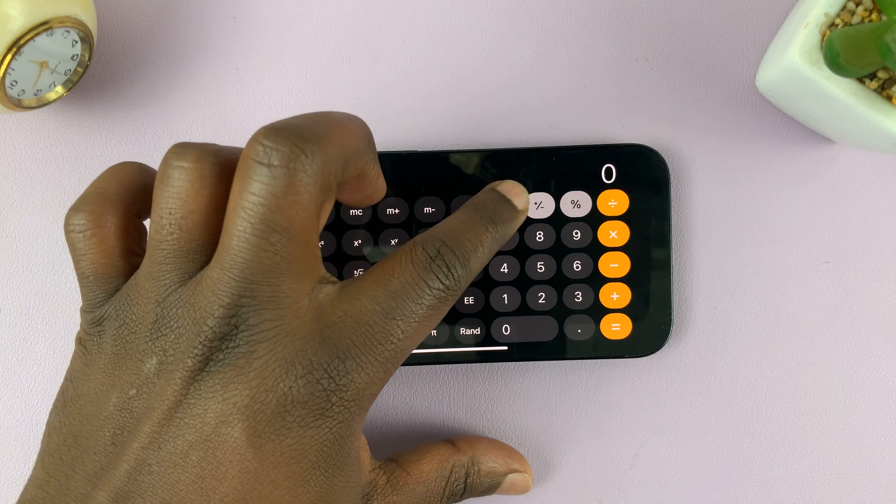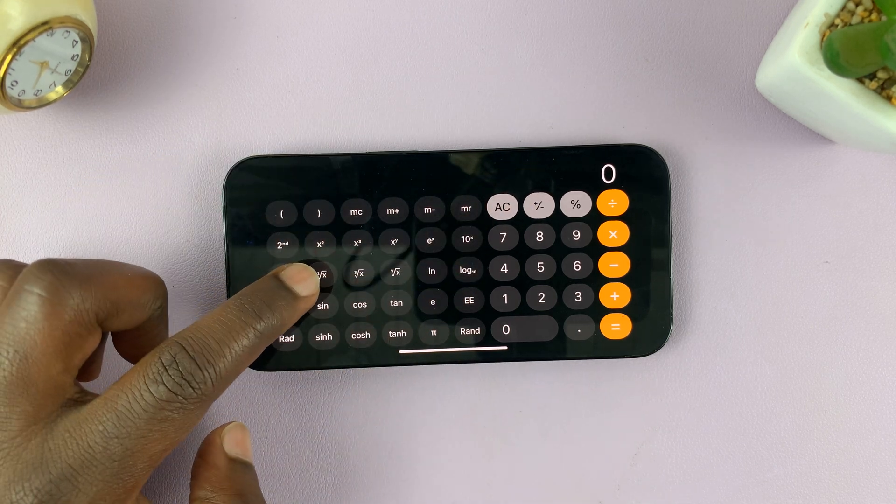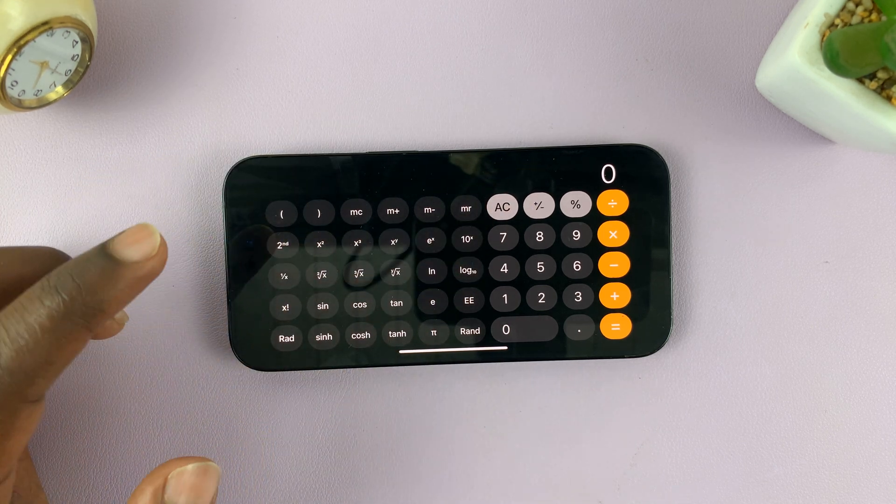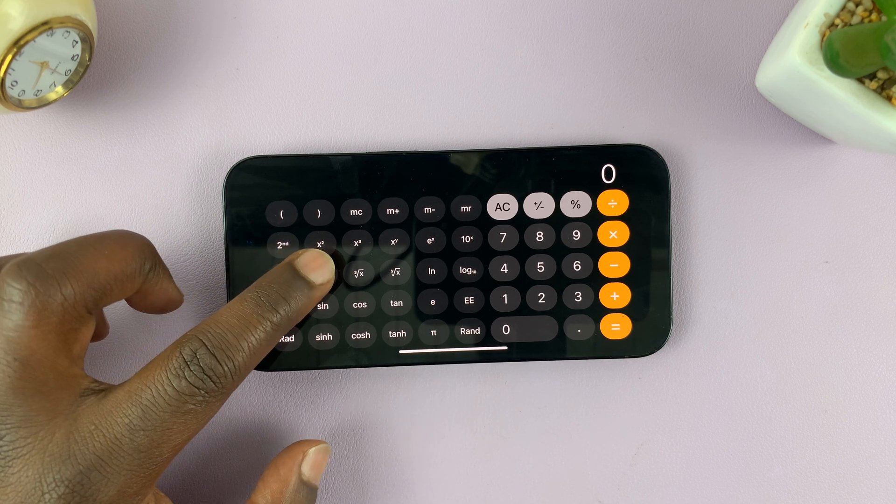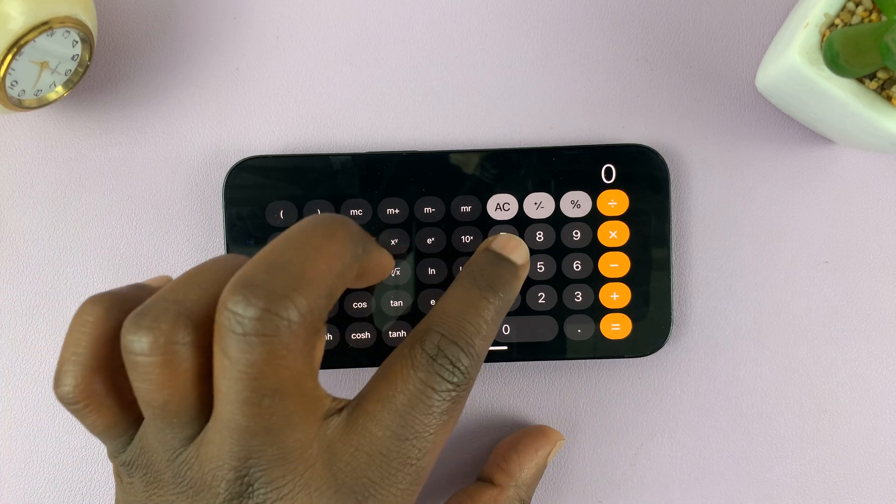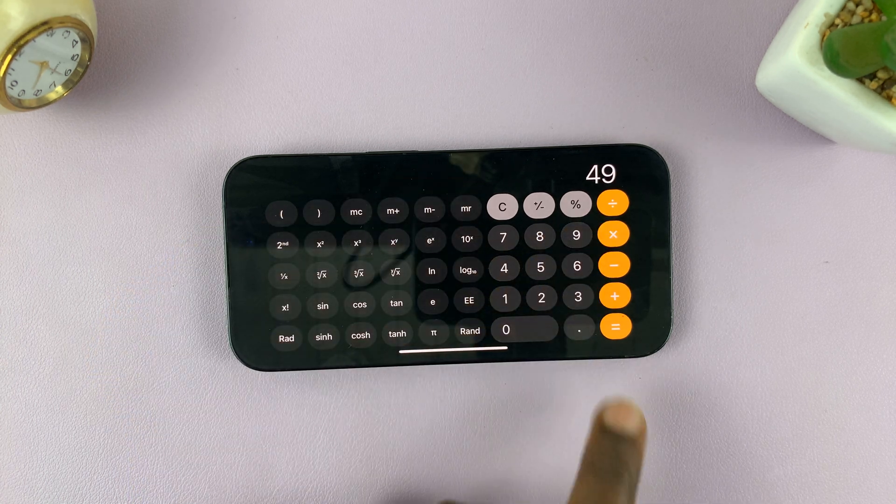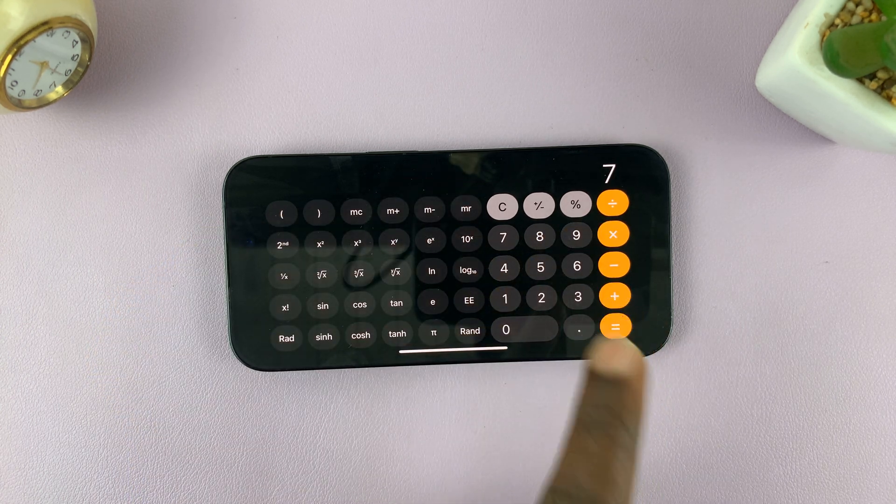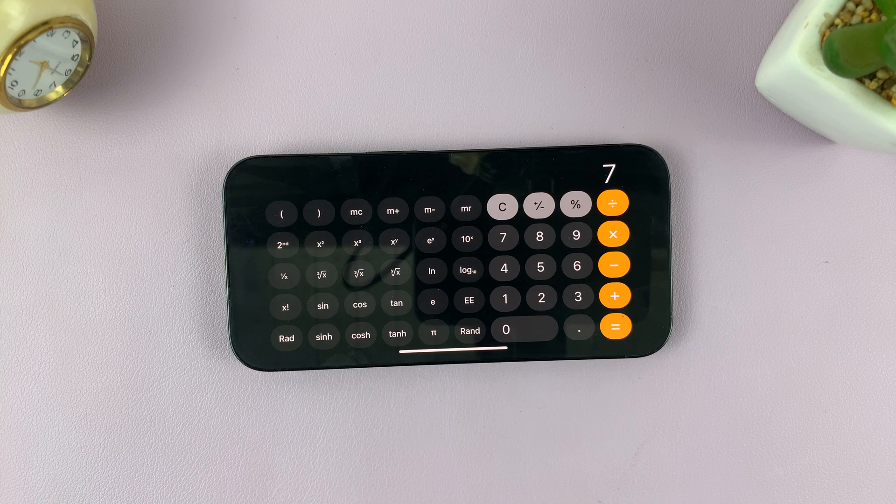Now another way I discovered you can do this is you can start with the square root button. So let's say you want to calculate the square root of 49. You can tap on the square root button and then type 49, and then tap on the equal sign. And that will also give you the square root of that number.